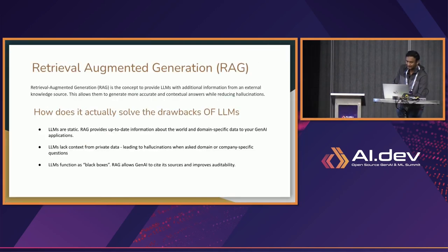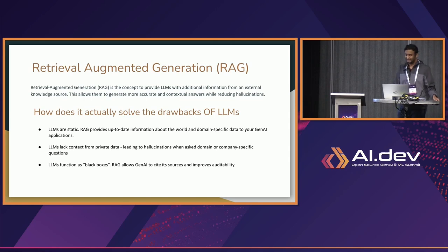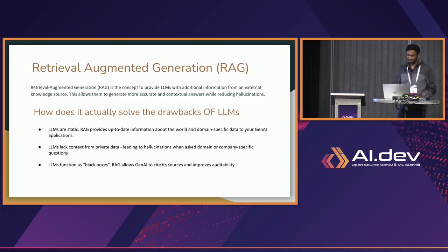RAG is a concept that provides LLMs with more context from external sources. That could be your enterprise datasets, external systems, or a knowledge base that you already have, which you don't want your LLM to be trained on. Before going into more details, let's see what are the drawbacks with today's LLMs.